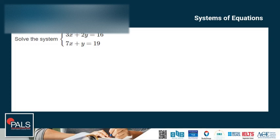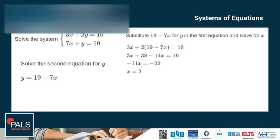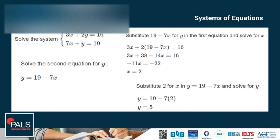Let's try an example. Solve the system: 3x plus 2y is equal to 16 and 7x plus y is equal to 19. Solve the second equation for y because it's easy to rearrange — that gives y is equal to 19 minus 7x. Substituting this value of y into the first equation gives 3x plus 2 times (19 minus 7x) is equal to 16. Simplifying gives a value of x equals 2. Then substituting 2 for x into y equals 19 minus 7x gives us y equals 5.